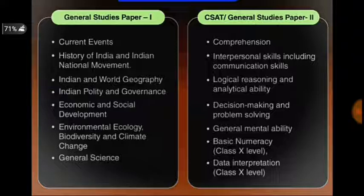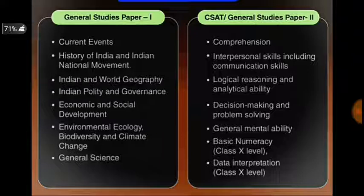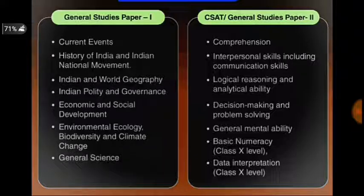CSAT, that is Paper 2, is a qualifying paper. Paper 1 scores are considered for your prelims result. Paper 2 is a qualifying paper requiring 33% marks to qualify.